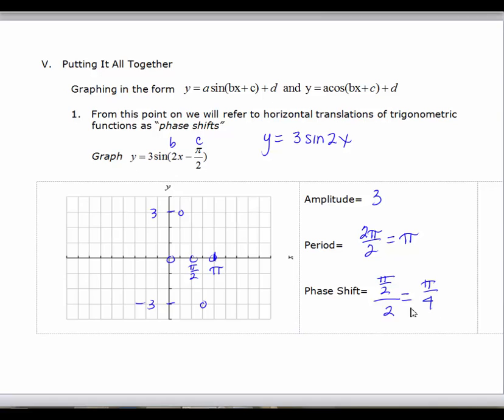And now I will take into consideration the phase shift of pi over 4. I'm shifting to the right. So if you're going to shift to the right, it's easier to move the rightmost point first. I'm going to shift every point over pi over 4. On our graph, one tally here, one unit is equal to pi over 4.